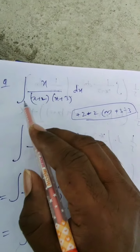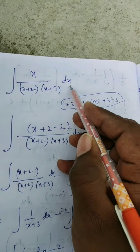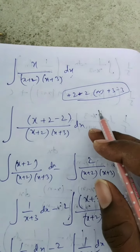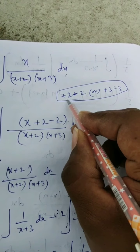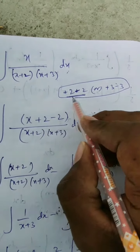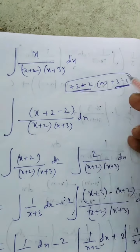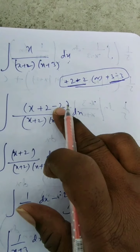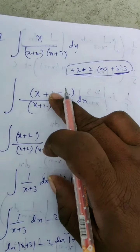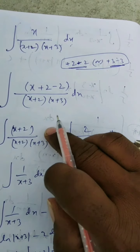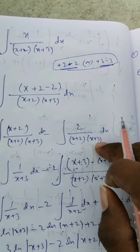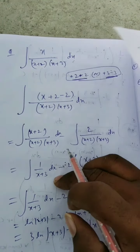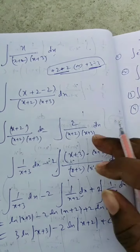Another partial fraction type question: integration of x upon x plus 2 into x minus 3 dx. If you try cancelling x on top it won't work directly. The trick is to write x as x plus 2 minus 2, so the numerator becomes x plus 2 minus 2. Separate: x plus 2 upon x plus 2 into x minus 3 dx, minus 2 upon x plus 2 into x minus 3 dx. The x plus 2 cancels in the first part, giving integration of 1 by x minus 3 dx.